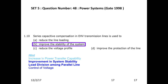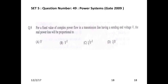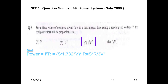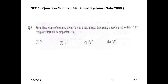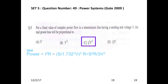Next question: For a fixed value of complex power flow in a transmission line having a sending-end voltage V, the real power loss is proportional to — V, V², 1/V², or 1/V? Power loss = I²R. Substituting I = S/(√3·V), power loss = S²·R / (3·V²), which is proportional to 1/V². Choice D is the right answer.